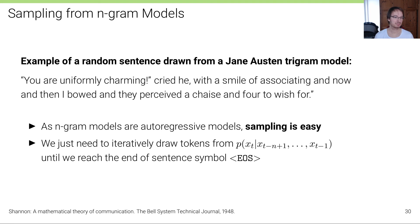This, as you can read, might not make a lot of sense, but it's still natural language as it could potentially occur. We can really see that this is something that could relate to the training set: 'you're uniformly charming'. Right, here: 'while a smile of associating and now and then I vote and they perceived chase and forward to wish for' - it doesn't make any sense, it's a very simple trigram model, but it's not just a random collection of words.